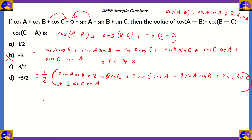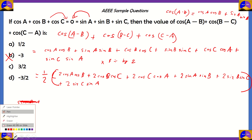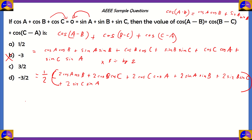Now, how do we move on from here? We're going to use the algebraic identity: (a + b + c)² equals a² + b² + c² + 2ab + 2bc + 2ca. So the 2ab + 2bc + 2ca part can be written as (a+b+c)² minus (a² + b² + c²). We can apply this for both the cosine and sine groups.